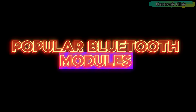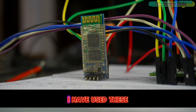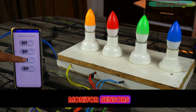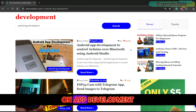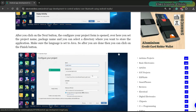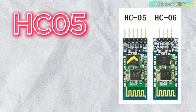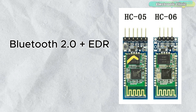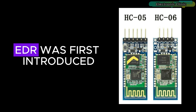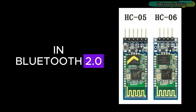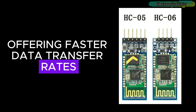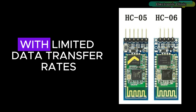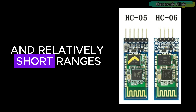Starting with the most popular Bluetooth modules, HC05 and HC06, I have used these in many projects to control loads and monitor sensors. I've also published an article on Android app development which many people have read and used to make their own applications. HC05 and HC06 are based on Bluetooth 2.0 plus EDR (Enhanced Data Rate), which was first introduced in Bluetooth 2.0, offering faster data transfer rates compared to the original Bluetooth 1.0, which had limited data transfer rates and relatively short range.